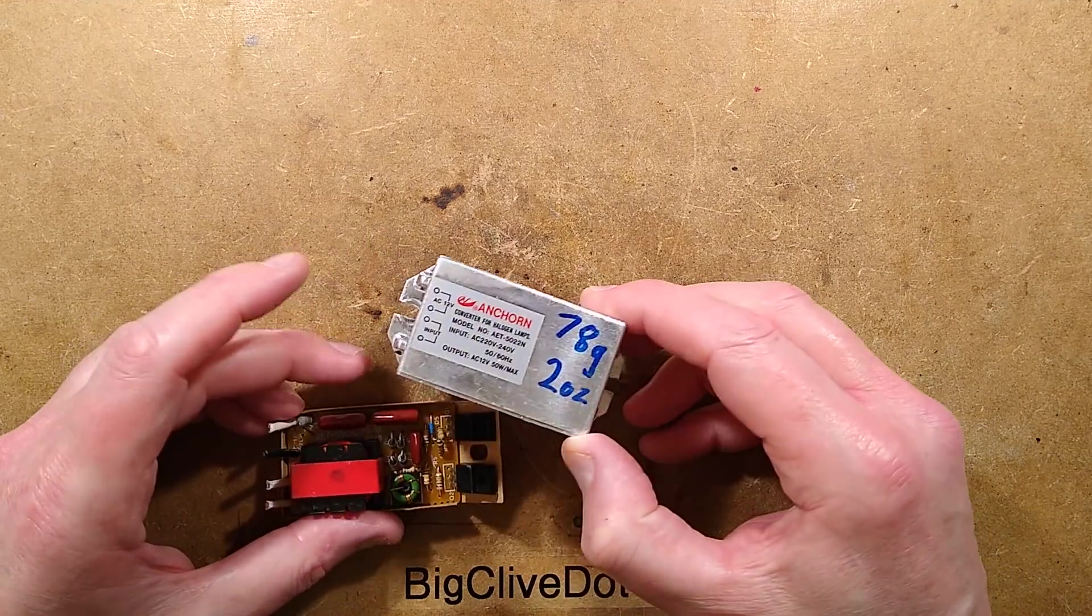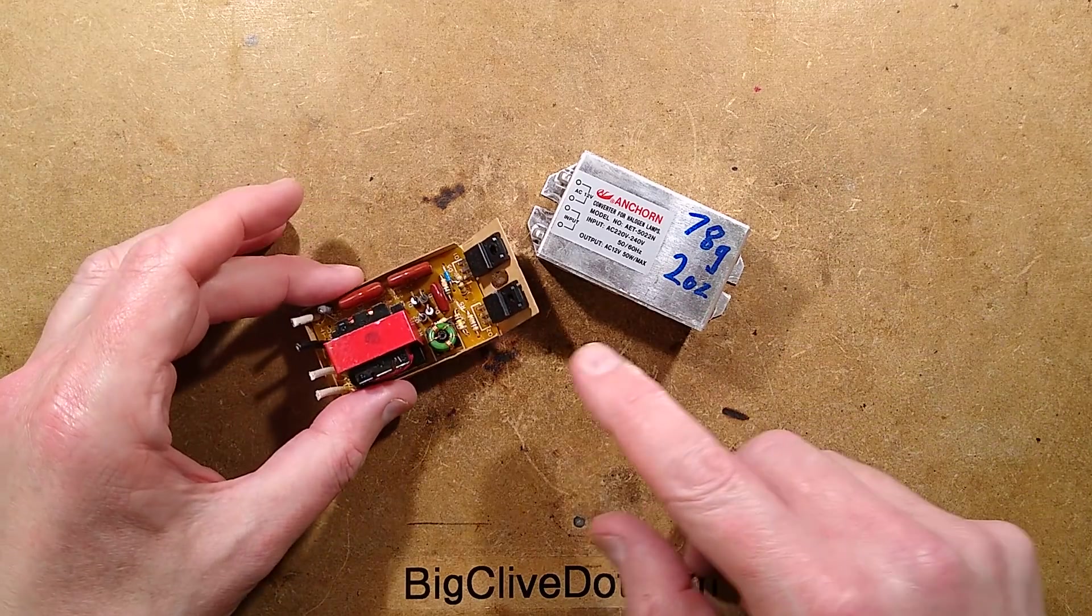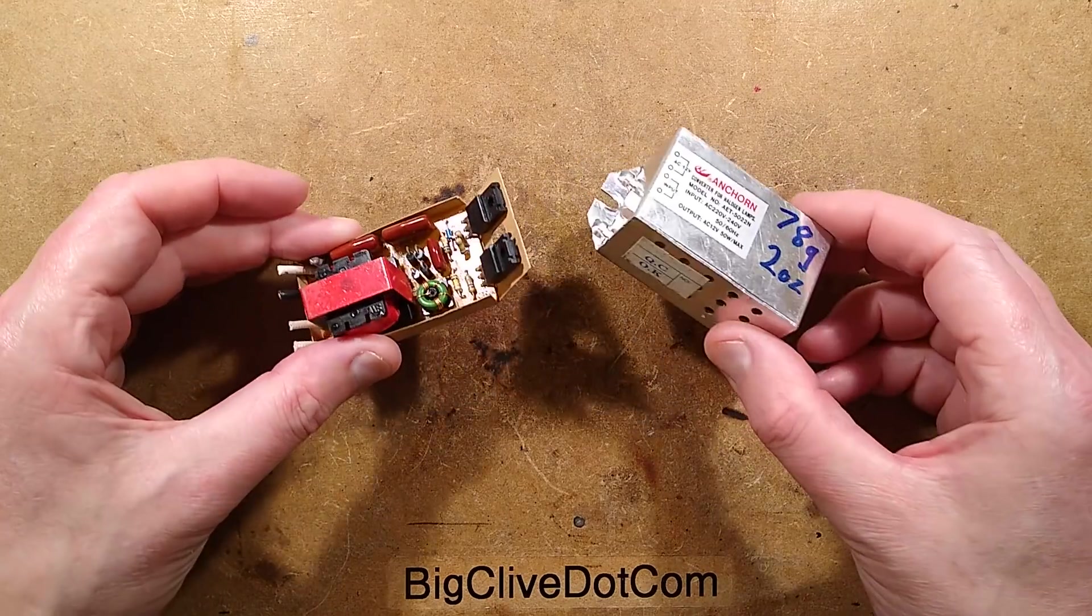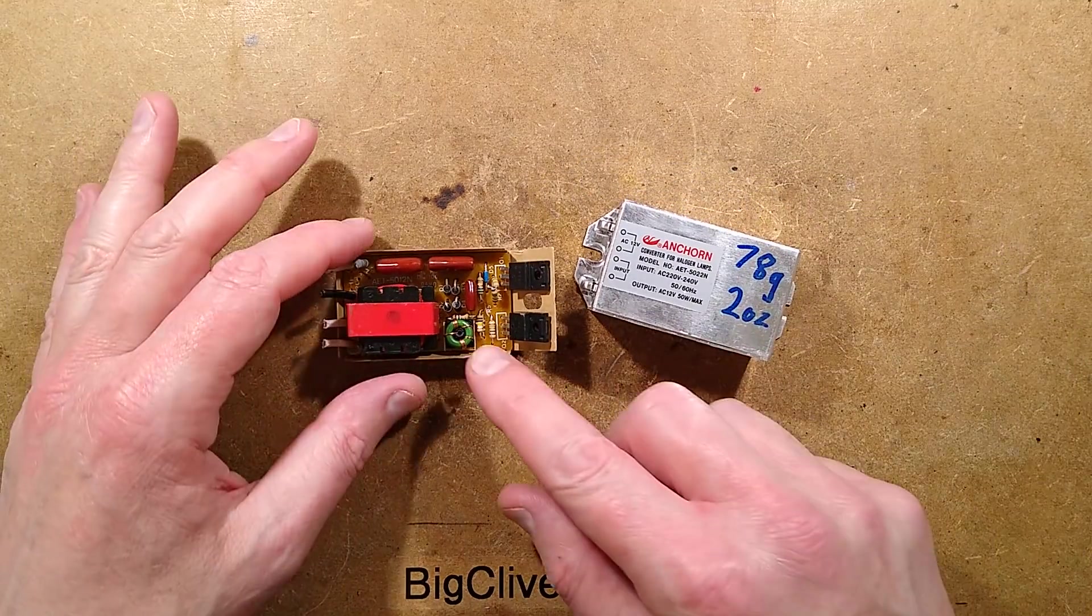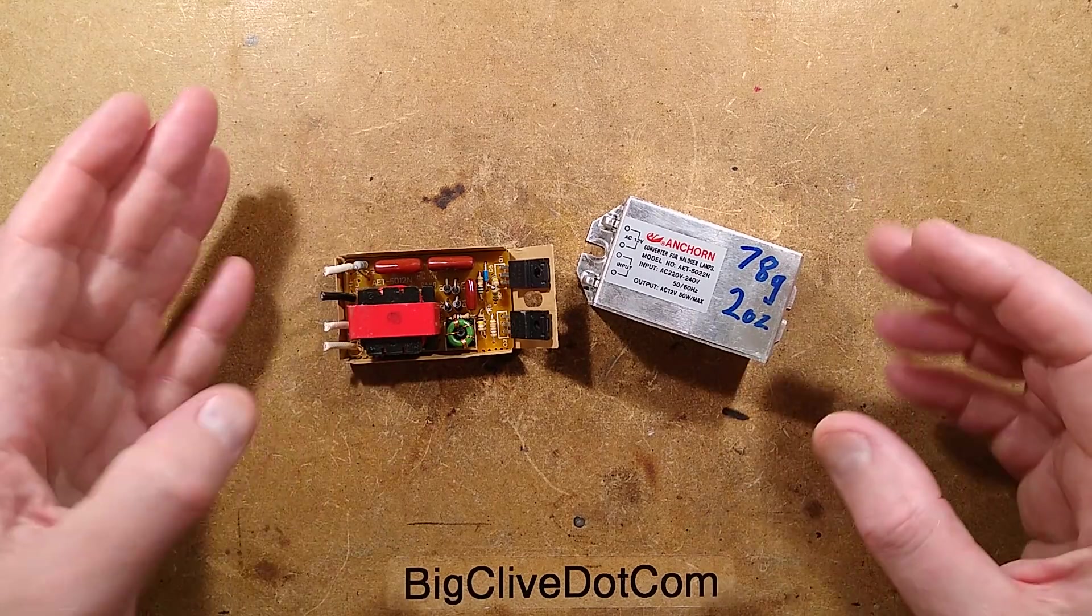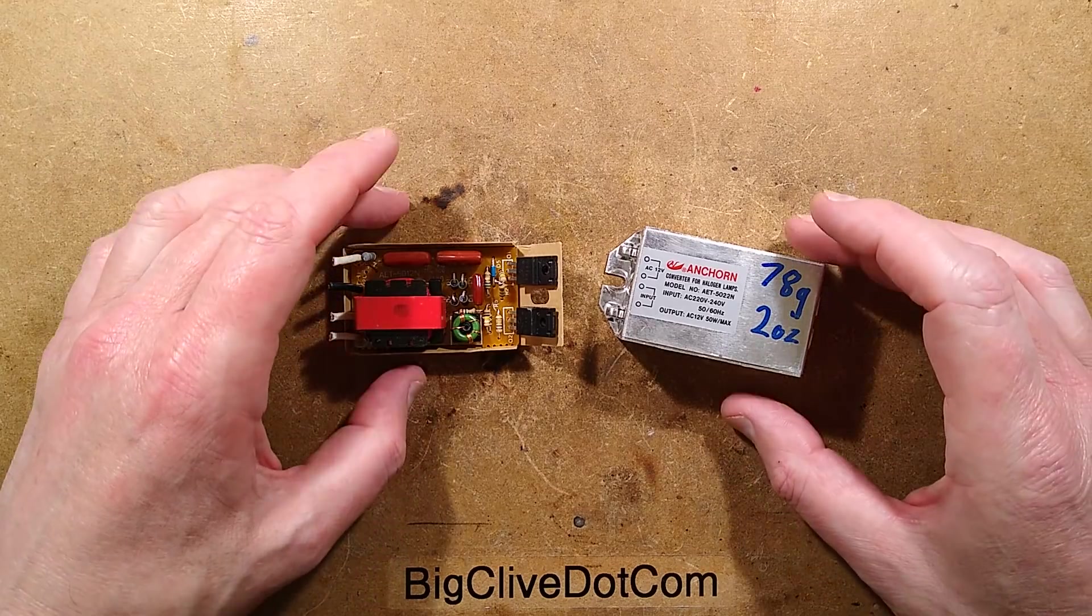In a recent video I took apart a disco light, an old one that contained a halogen lamp. The halogen lamp was run from this electronic transformer and I thought, let's take a look at one of these because I don't think I've taken one apart in a video before. This is a very generic one so it's ideal, so let's get straight into the circuitry.